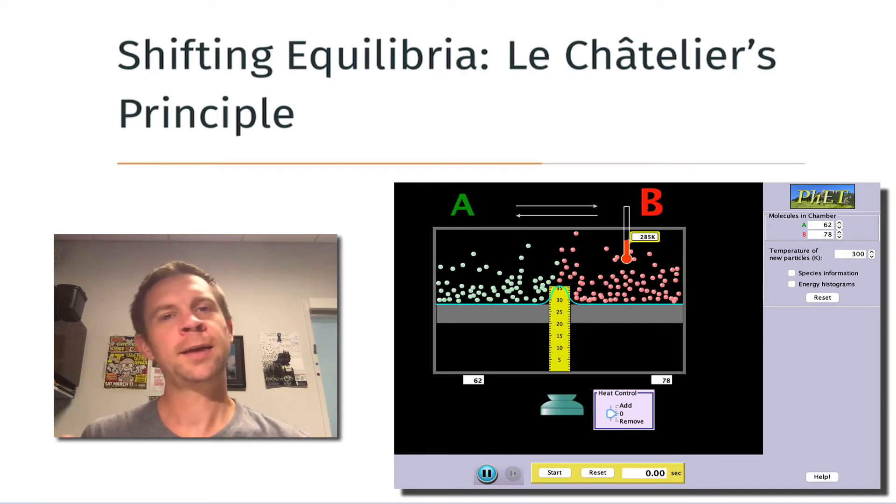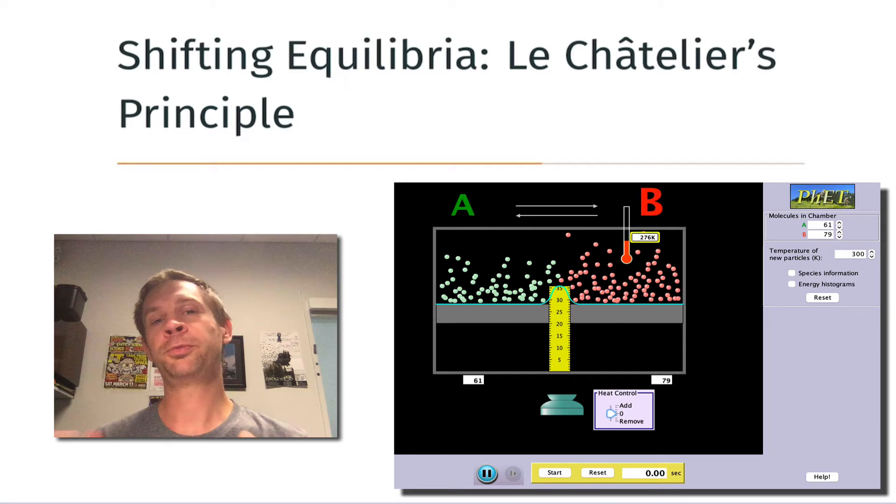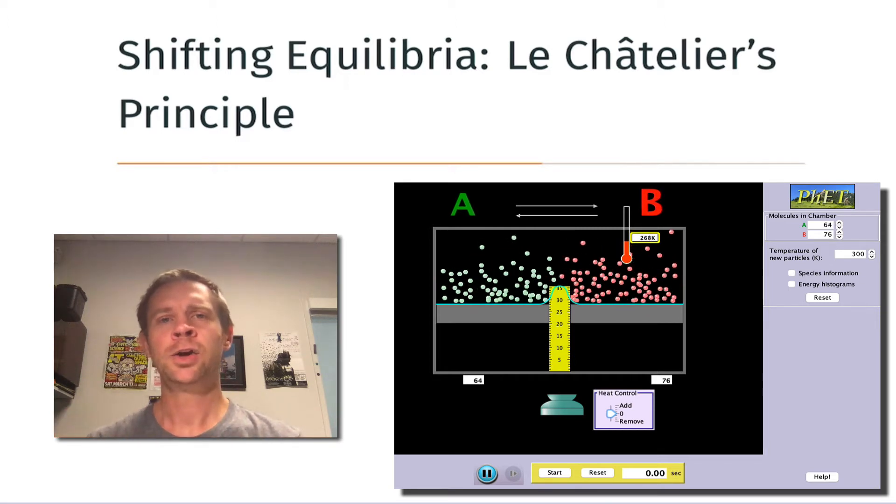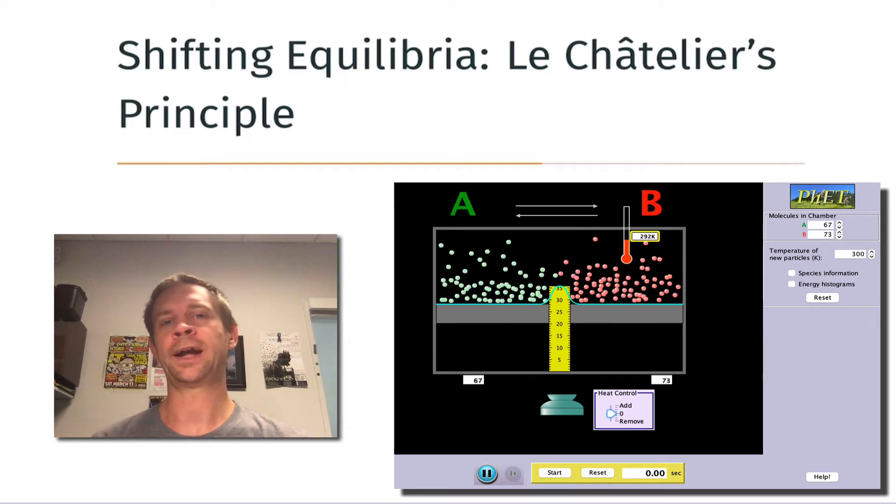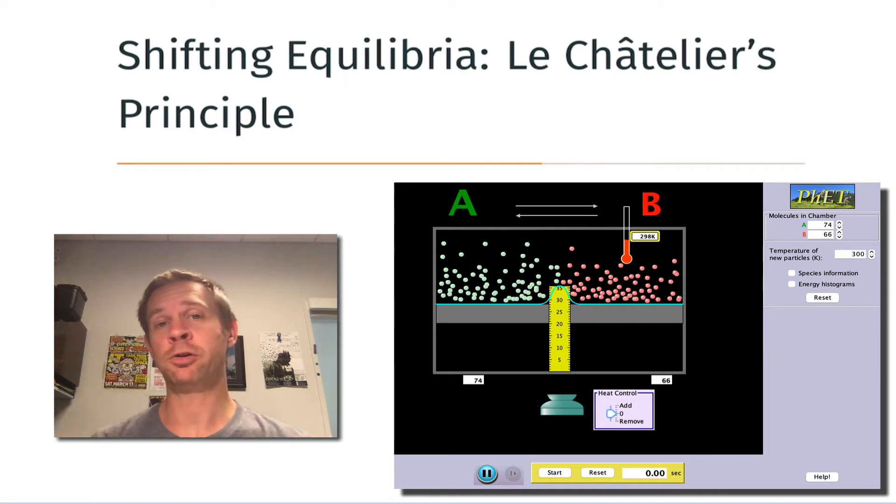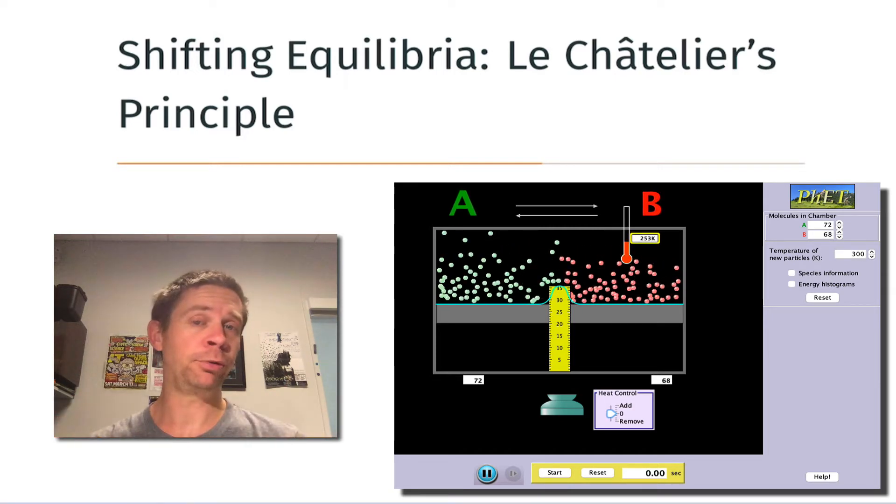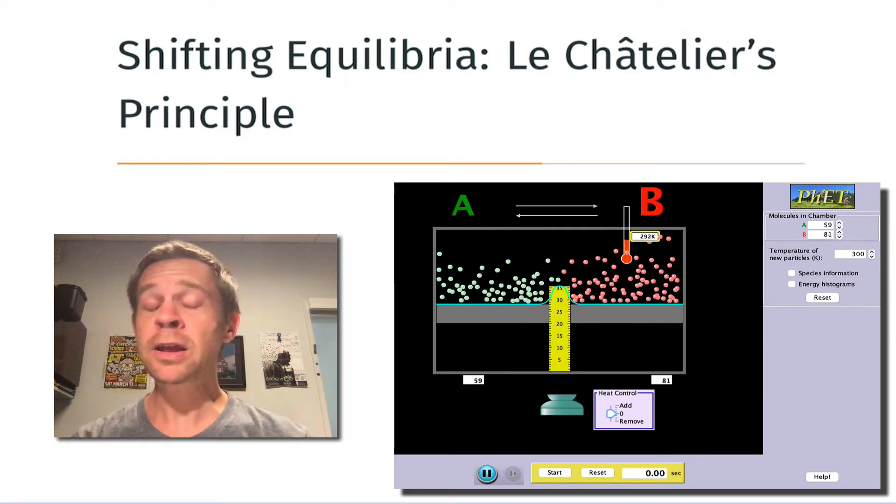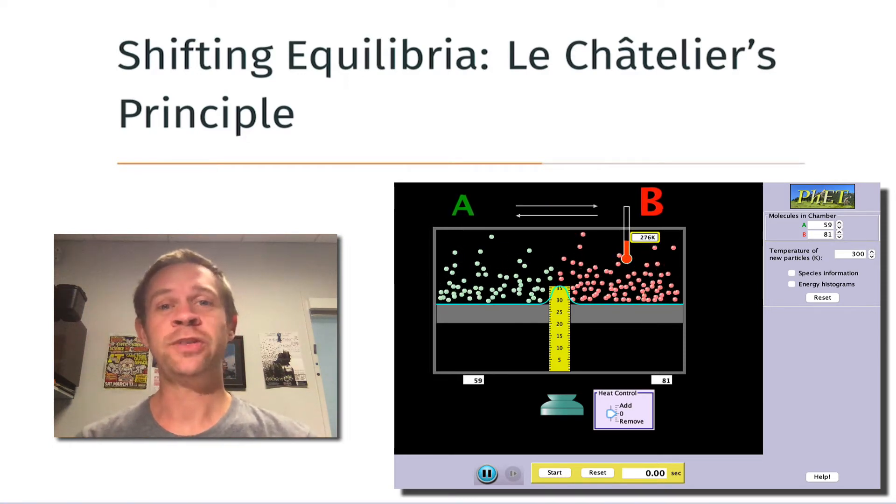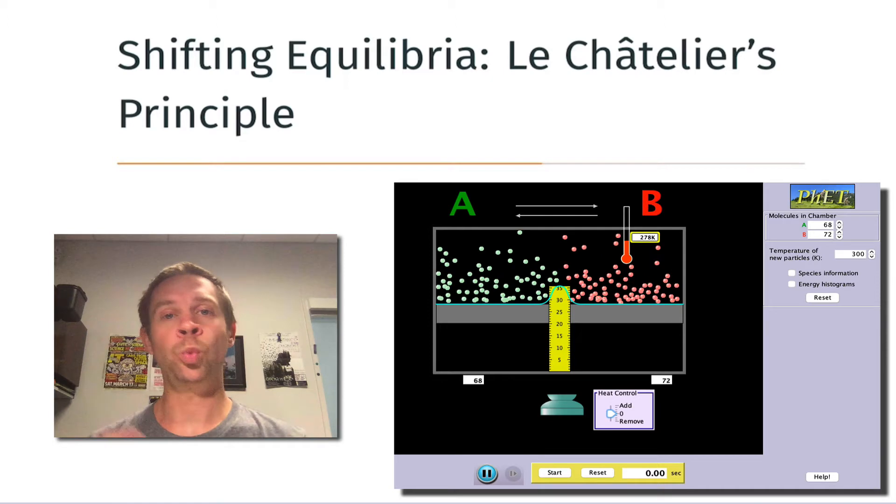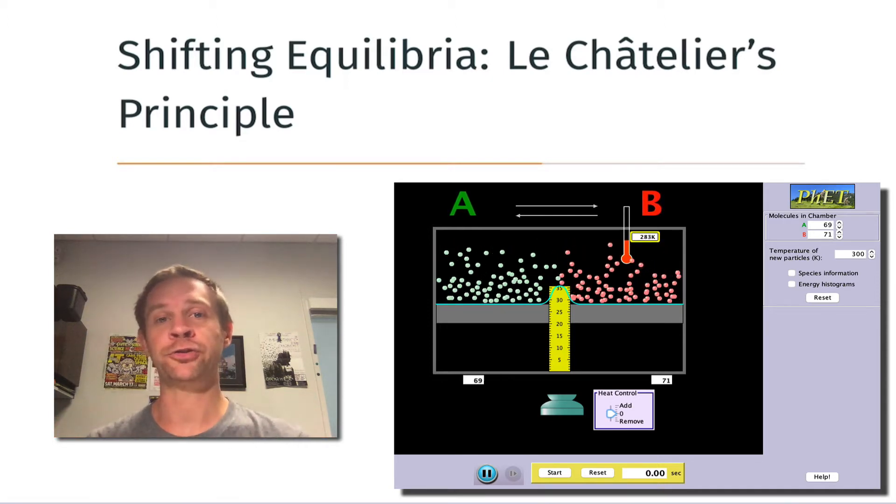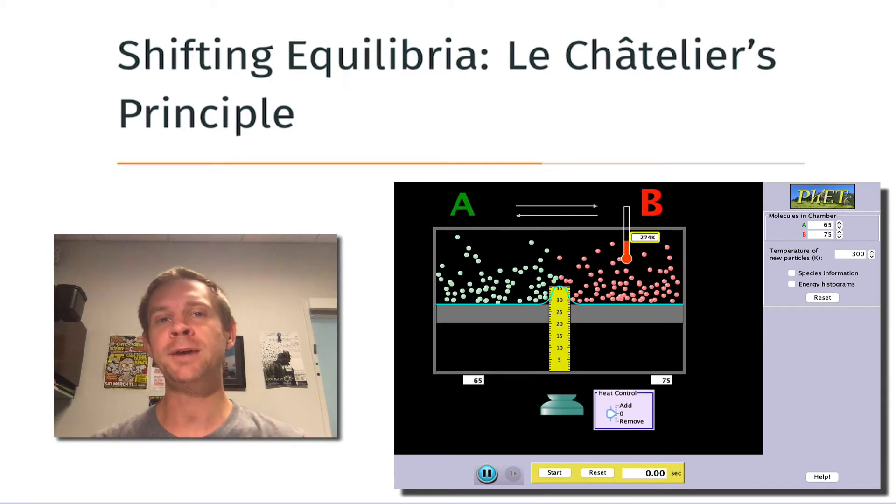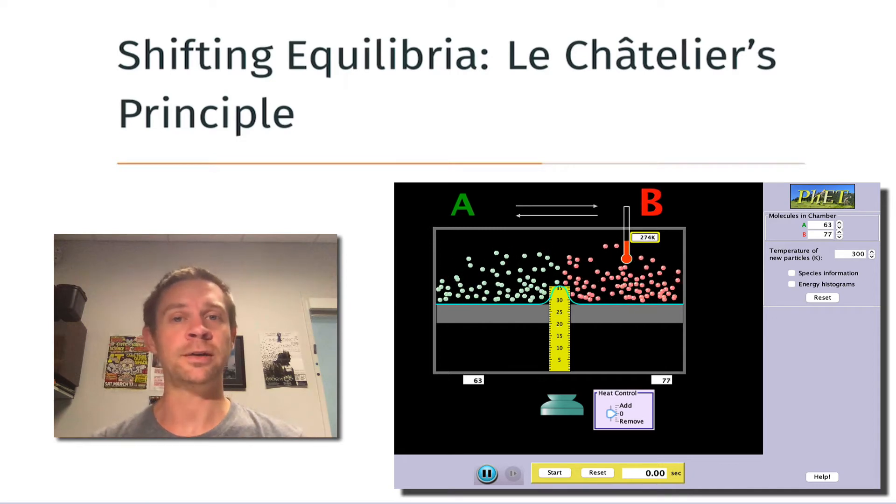Thus far, we've focused on chemical equilibrium of reversible reactions where we need to worry about both forward and reverse reactions. At chemical equilibrium, we have appreciable amounts of both reactants and products. There are some reactions where the equilibrium constant is very close to 1, where the equilibrium mixture tends to be close to a 50-50 mixture of reactants and products.